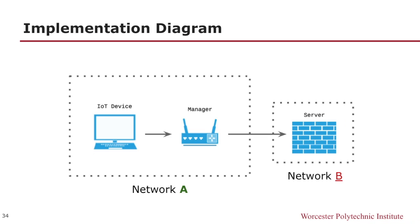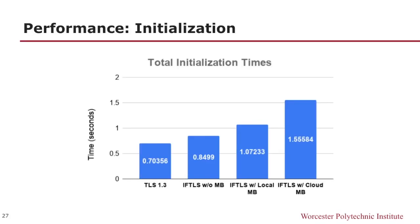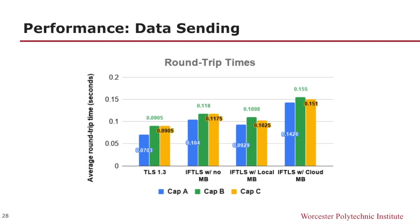We also tested a no middlebox scenario to measure the baseline delay IFTLS introduces compared to TLS 1.3. The primary performance metric we measured was delay. We measured how long it took to establish an IFTLS connection under different scenarios, such as with a local middlebox or with a cloud-based middlebox. We found that the additional overhead imposed by IFTLS is negligible for IoT devices, since a connection is not re-established very frequently. We also looked at round-trip times for data sending by replaying three different IoT captures, and found that IFTLS produced similar round-trip times to that of TLS 1.3, especially when there was no cloud-based middlebox.